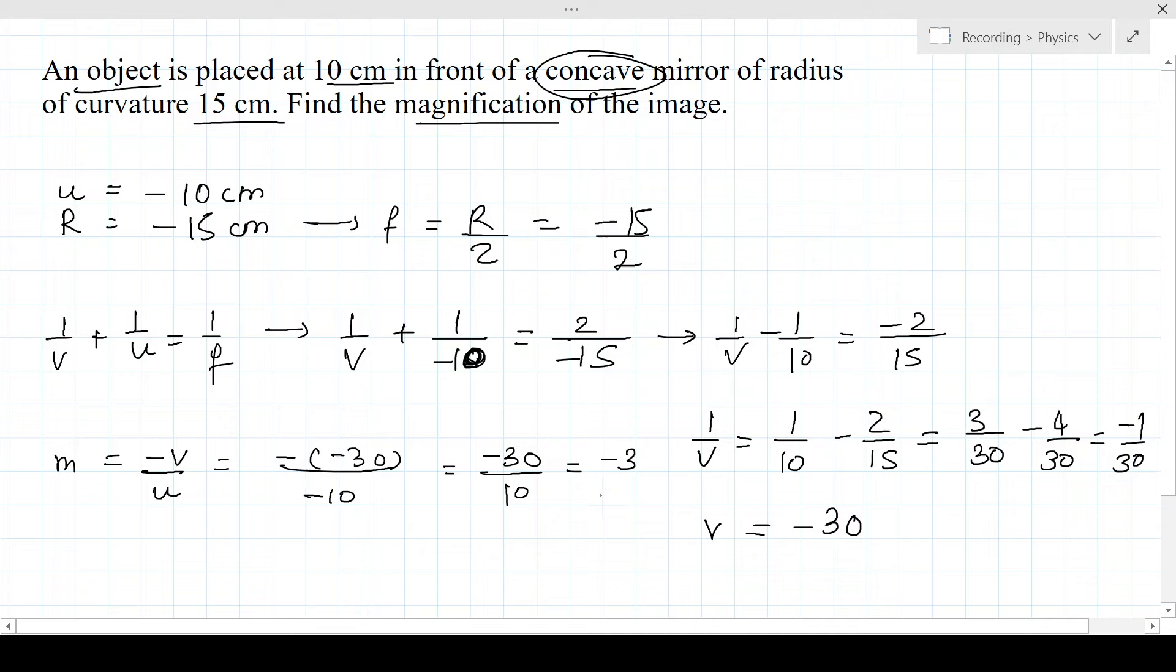And that's your answer. The magnification is minus 3. Minus represents real and inverted, and 3 represents enlarged. I hope this helped you out. I hope you learned something today. Have a great day everyone. Thank you very much.